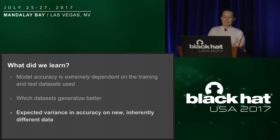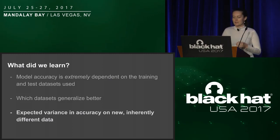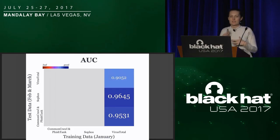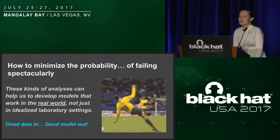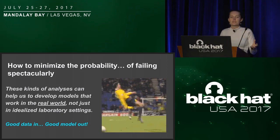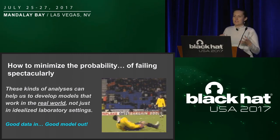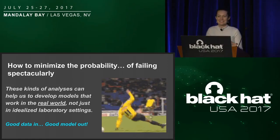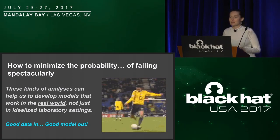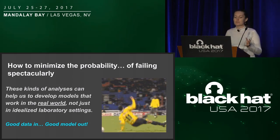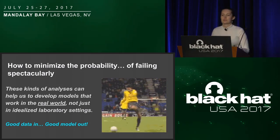Finally, we learned more about the expected variance in accuracy on new inherently different data sets. Assuming we deploy the VirusTotal model and expect our deployment data to be in the range of these test sets, we can expect our AUC to also be in that range. Models are really liable to fail on new inherently different data sets, and because we often don't know what deployment data is going to look like, it's really important to map the limitations of our models and make sure the models we deploy are reliable and consistent. These kinds of analyses help us develop models that work in the real world, not just in idealized laboratory or paper settings.